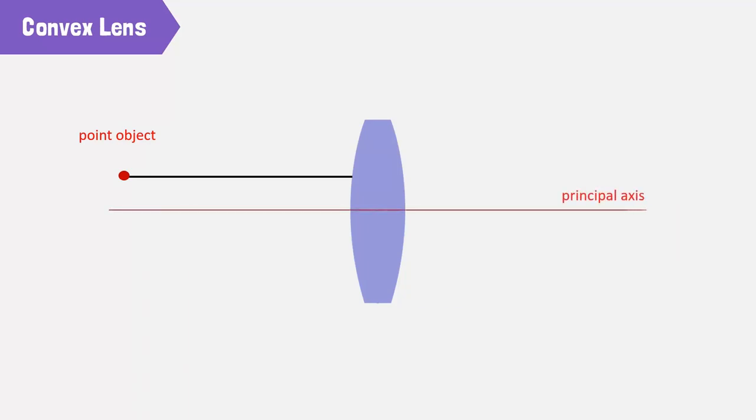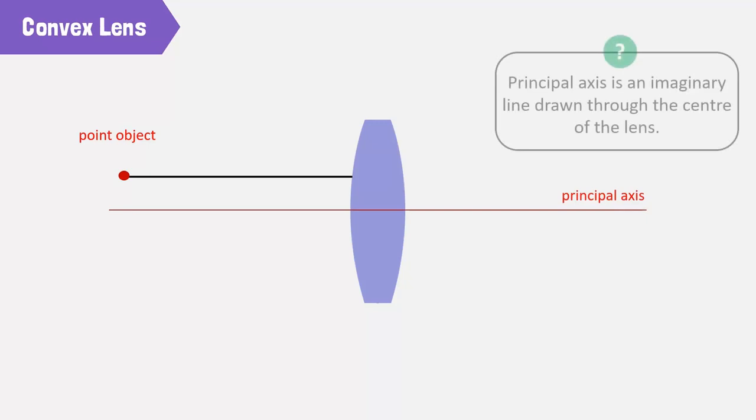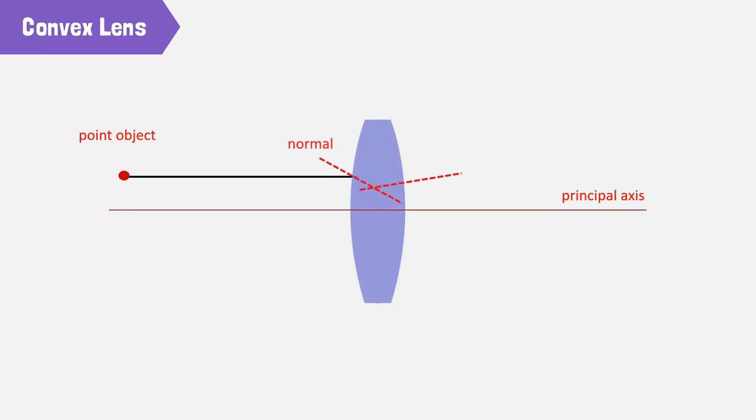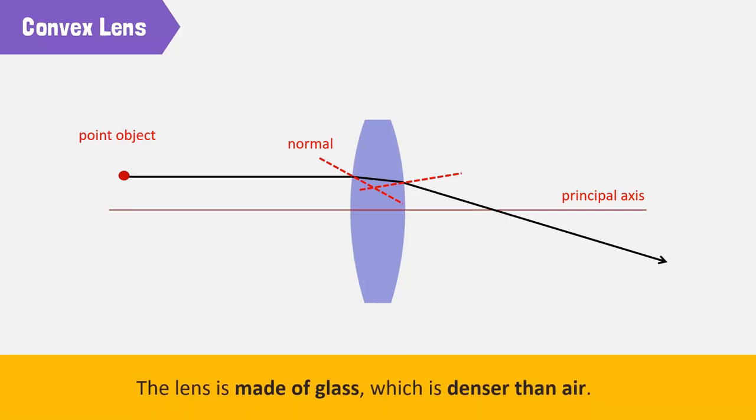Consider a convex lens. Somewhere far off, a point object emits a ray of light that falls on the lens. If a light ray that is parallel to the principal axis falls on the lens, the light ray will refract towards the normal as it enters the lens, because the lens is denser than the air around it. This is because the lens is made of glass, which is denser than air.